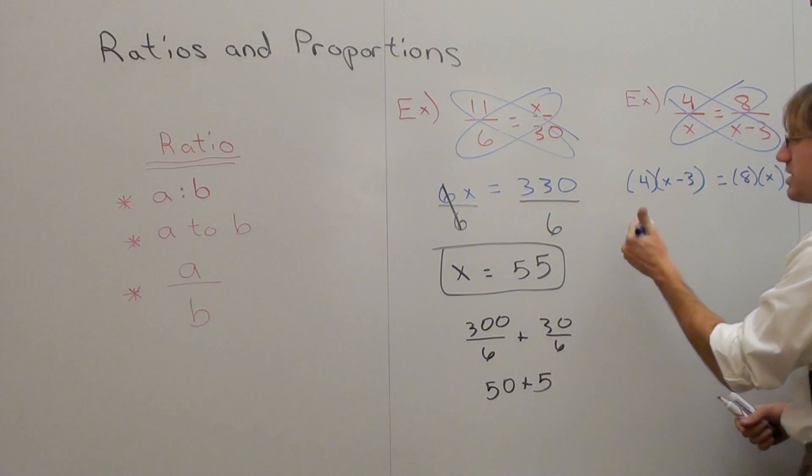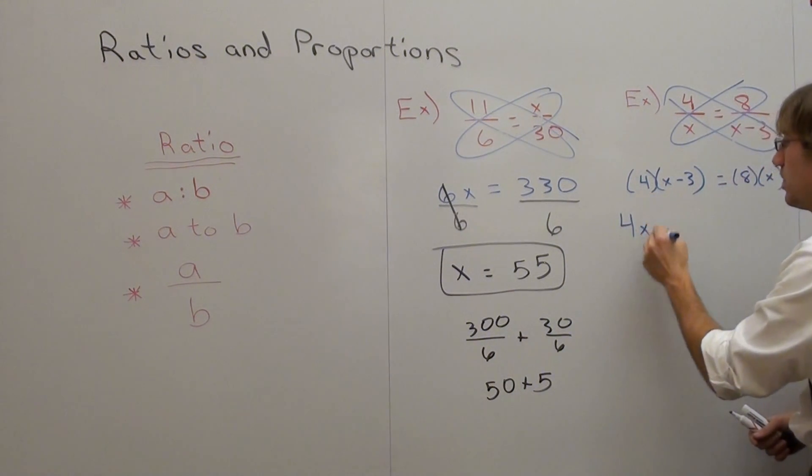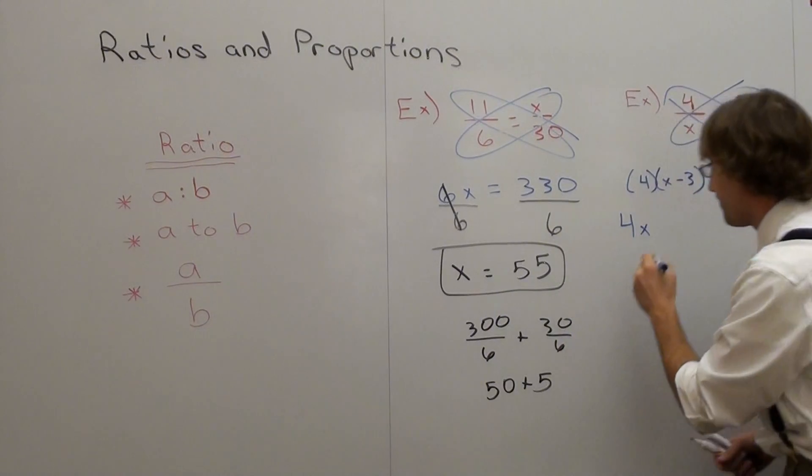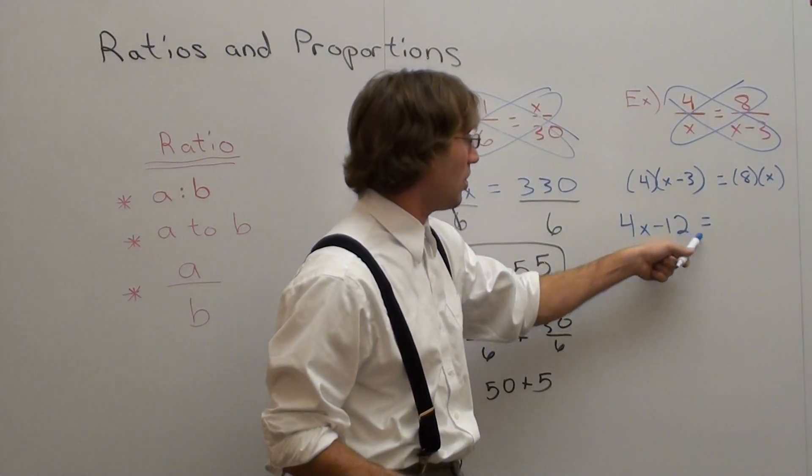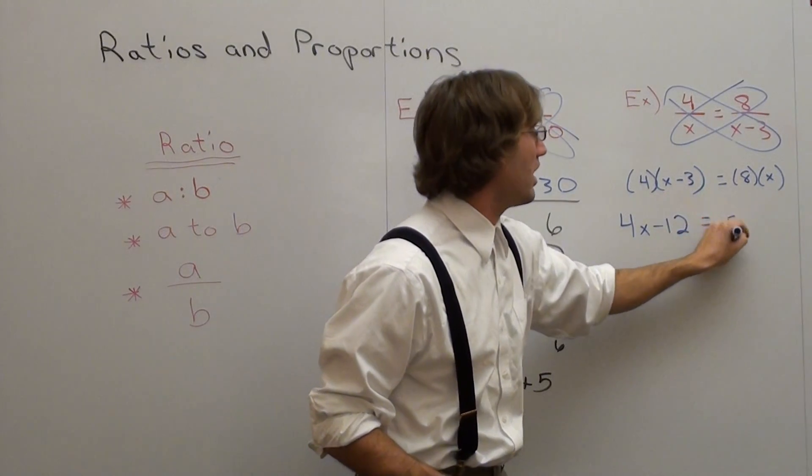4 times x, 4x, 4 times negative 3, negative 12. Don't forget your equals. 8x.